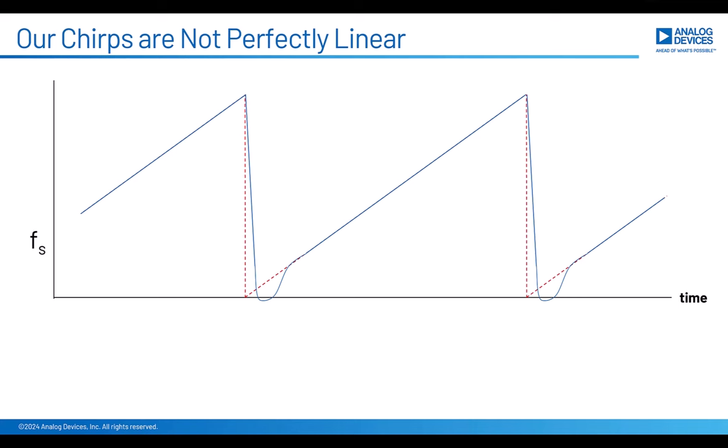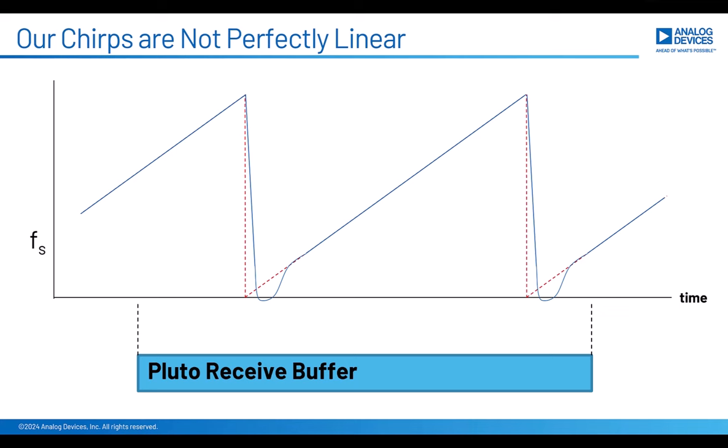If we were creating this ramp digitally in a DAC, this would look a lot better. But for us, what we have is this ramp that is not quite linear at all times. Our frequency ramps up and then we want it to reset to the lower frequency. But that takes some time since it's an analog loop. There's probably a bit of overshoot and then it races to catch up with where it should be. From that point to the end of the ramp, it's very linear. But when our Pluto receive buffer grabs a couple of ramps, it also gets some of that nonlinear portion.